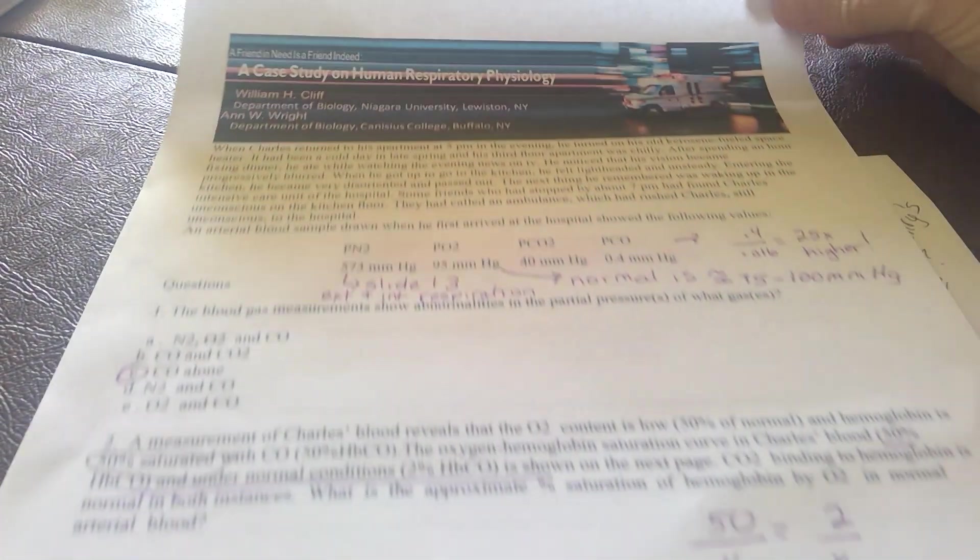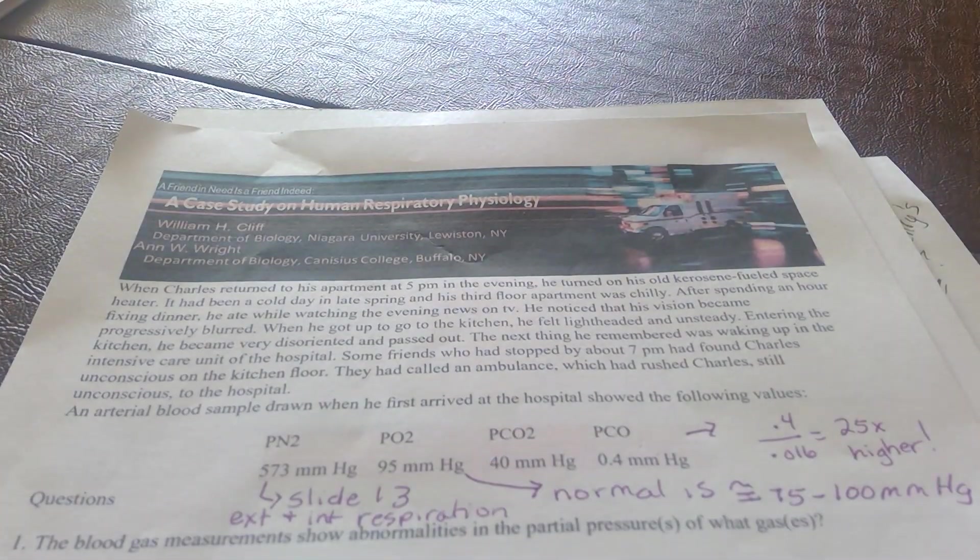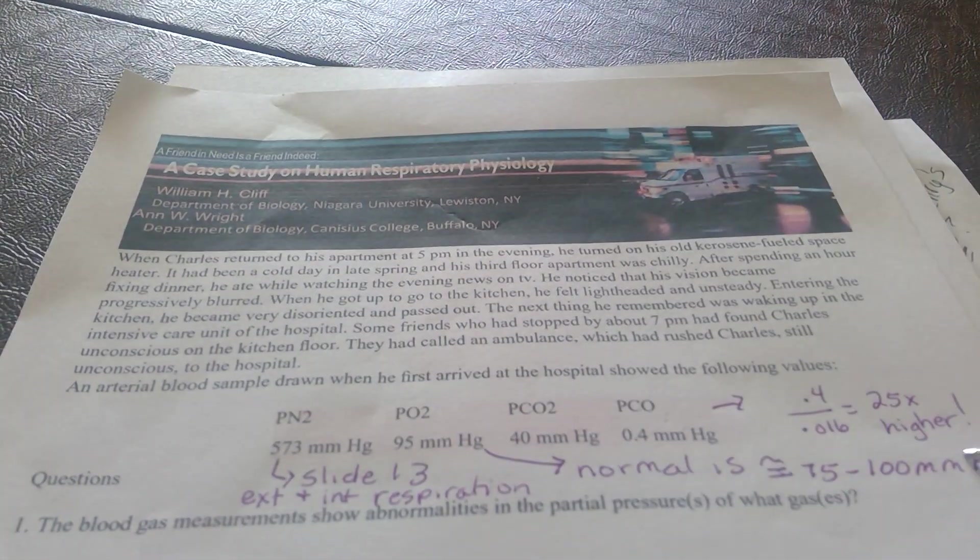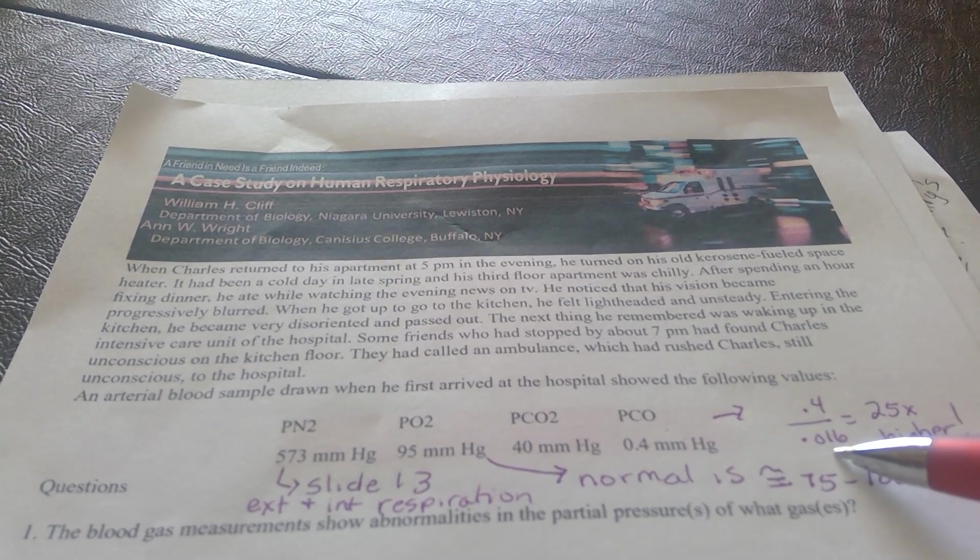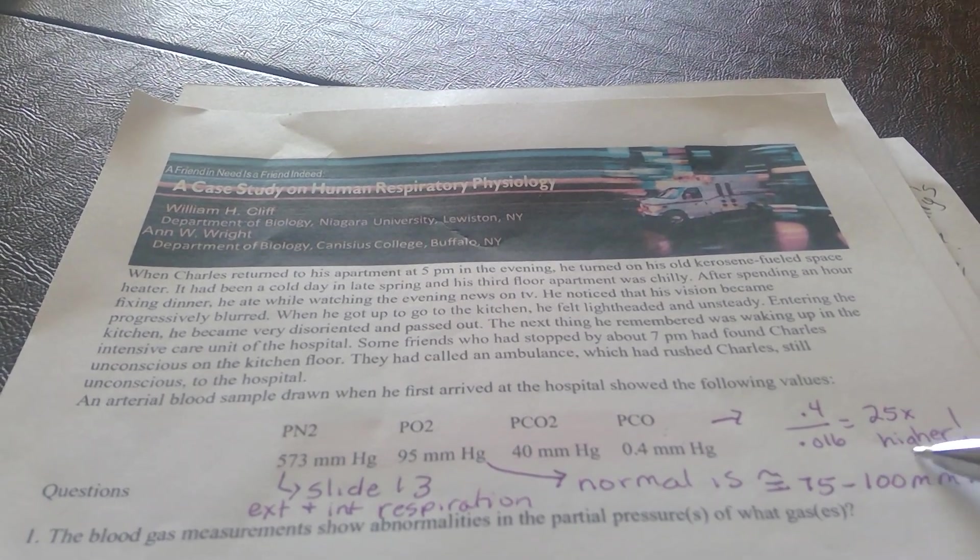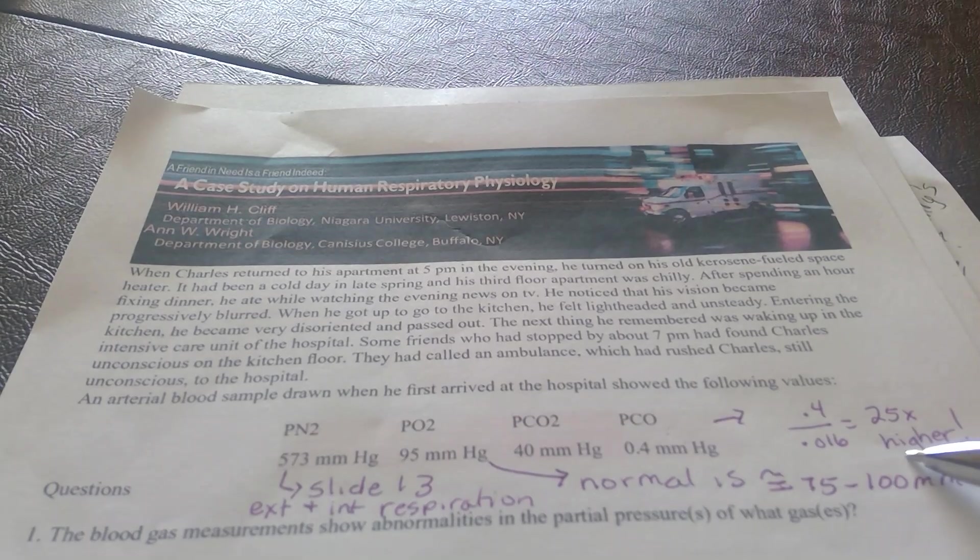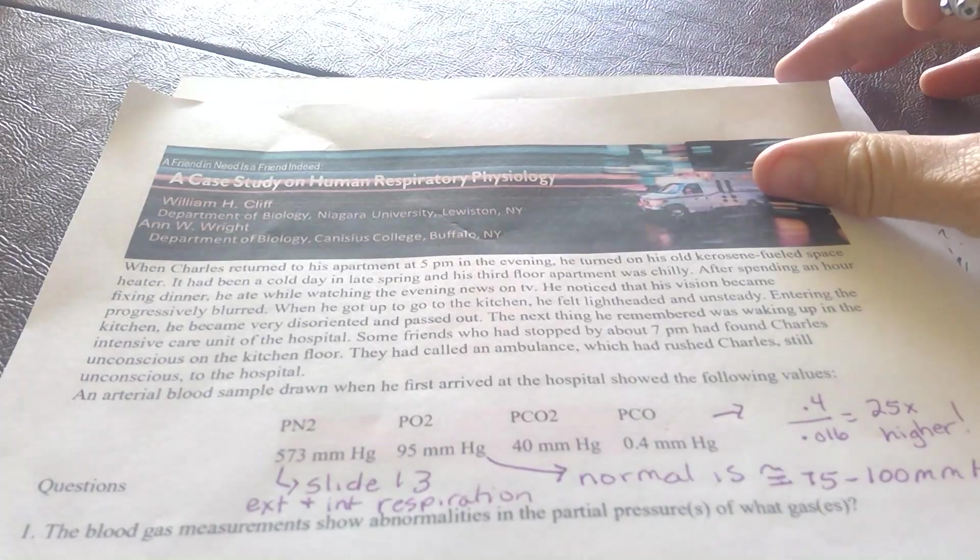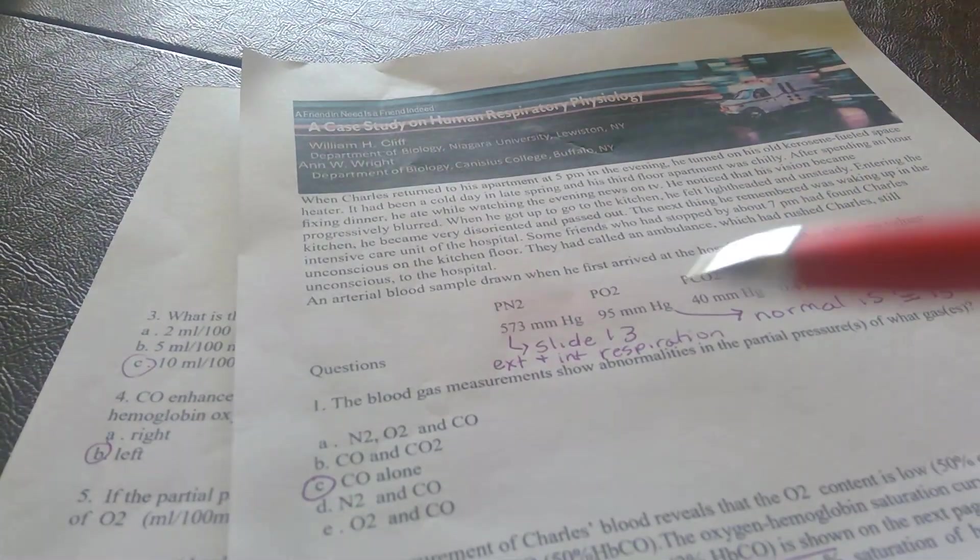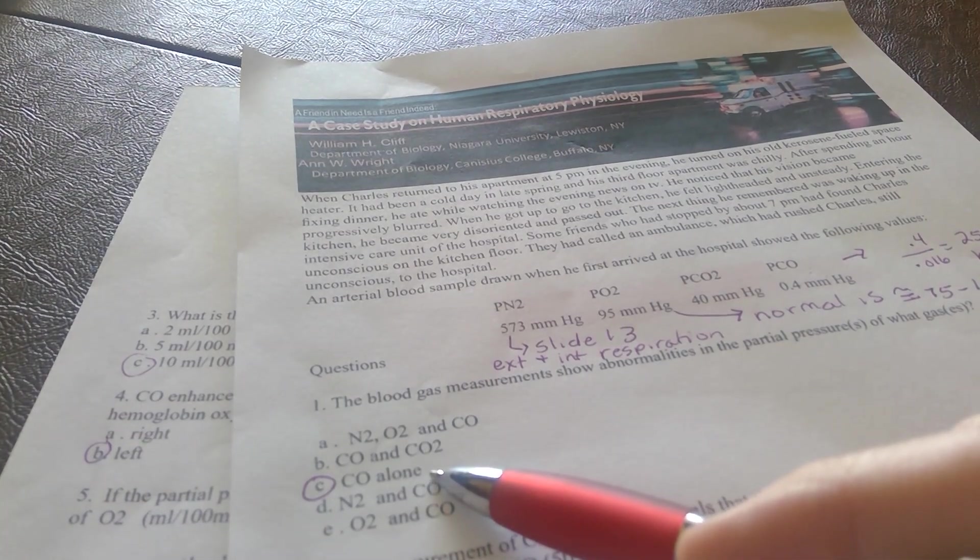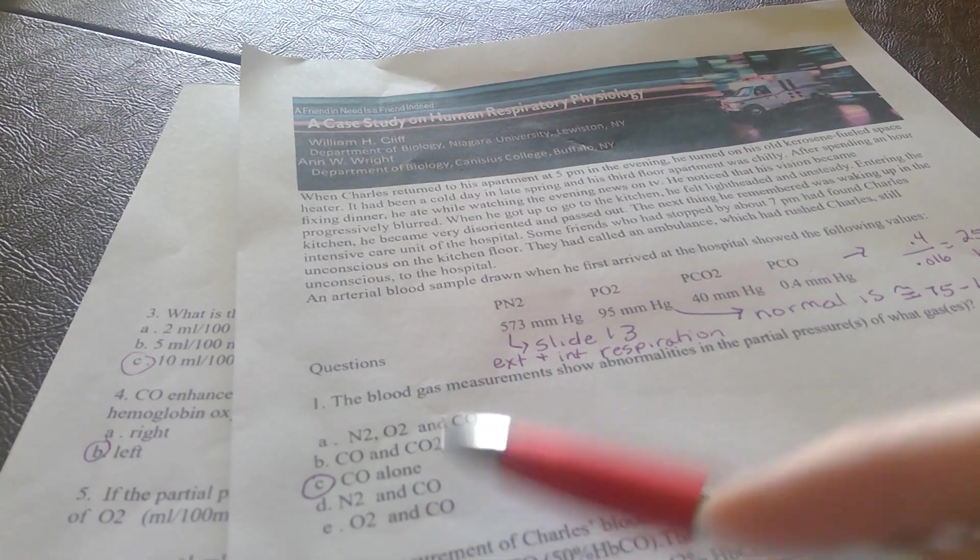If I divide Charles's value 0.4 by 0.016, I can see that Charles has 25 times higher carbon monoxide values. That means out of the gases that we are given, carbon monoxide alone is the issue.